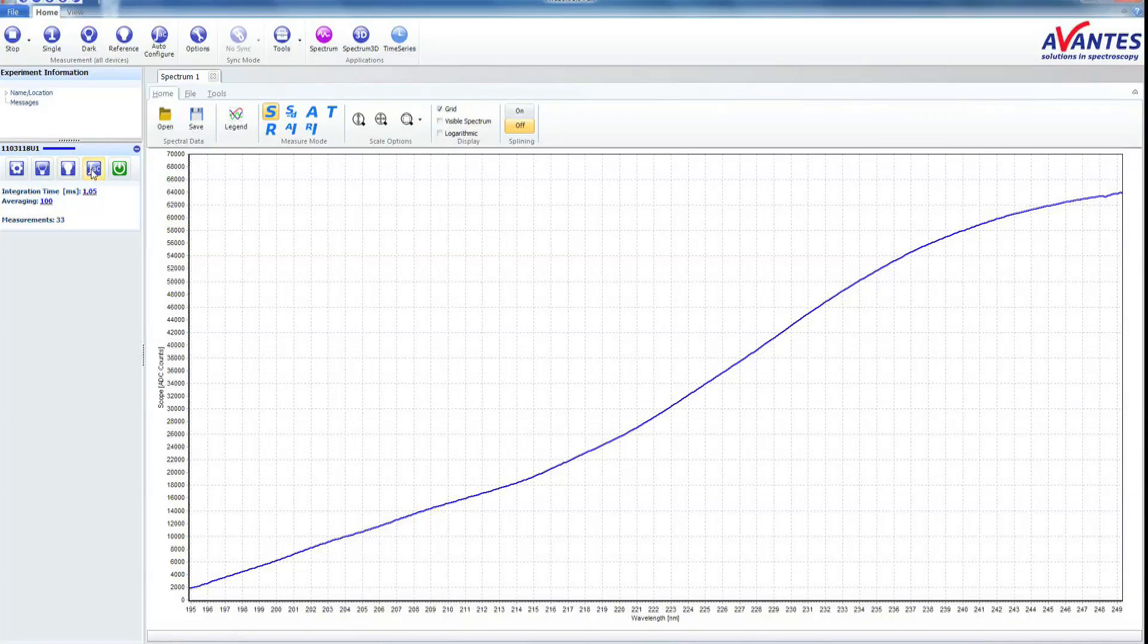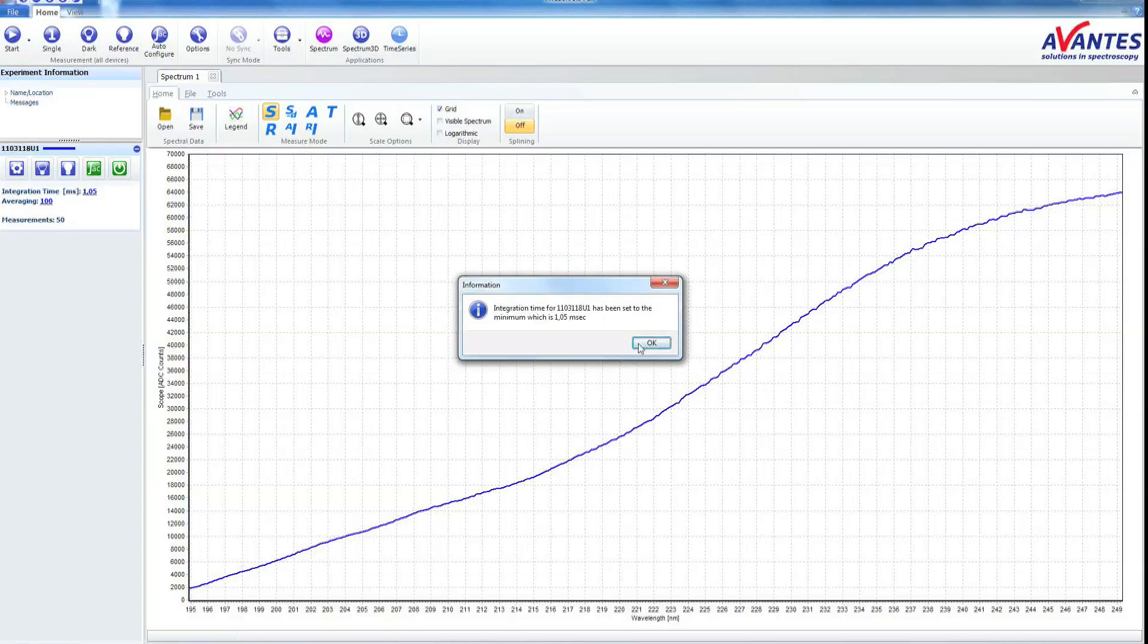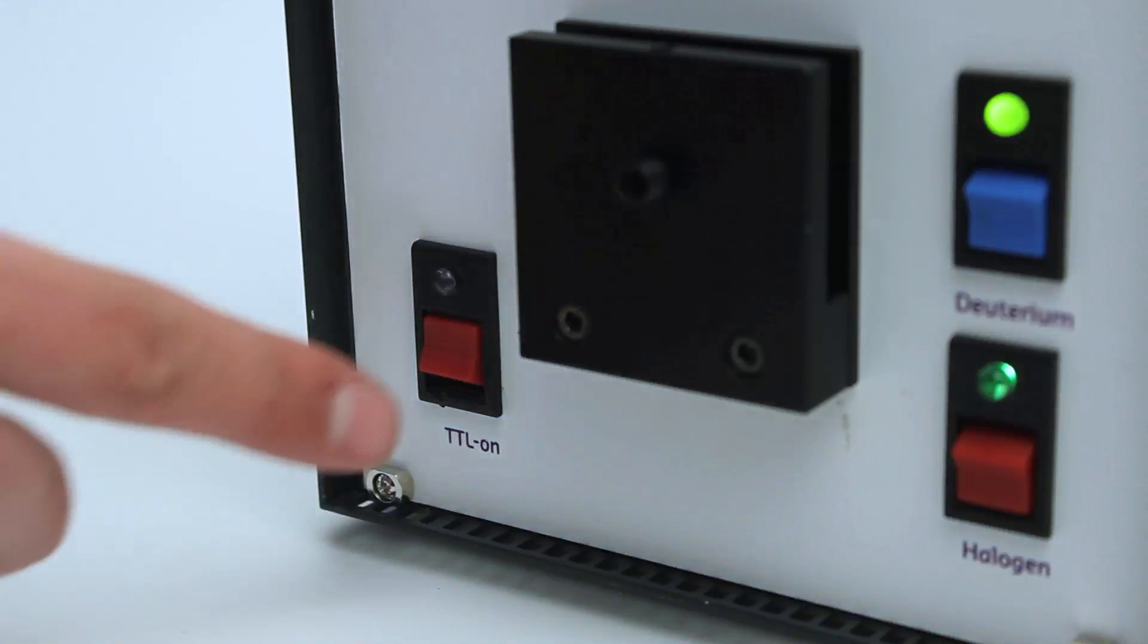Click the Auto Configure button to calculate the best possible intensity and number of averages. Please open the shutter.